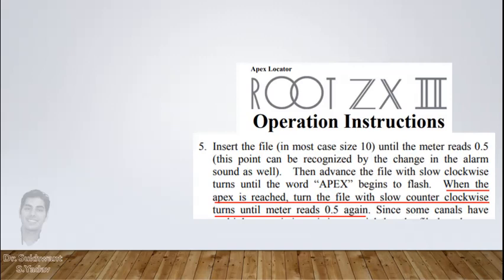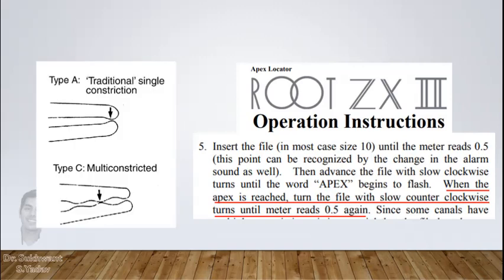Lastly, why do they advise to take the file up to apex and then come back to the 0.5mm mark? Because sometimes there can be many apical constrictions as shown in the picture. So to reach the apical-most constriction, this should be followed. One more thing: neither keep the canal dry nor over-flooded with irrigant for best possible results.